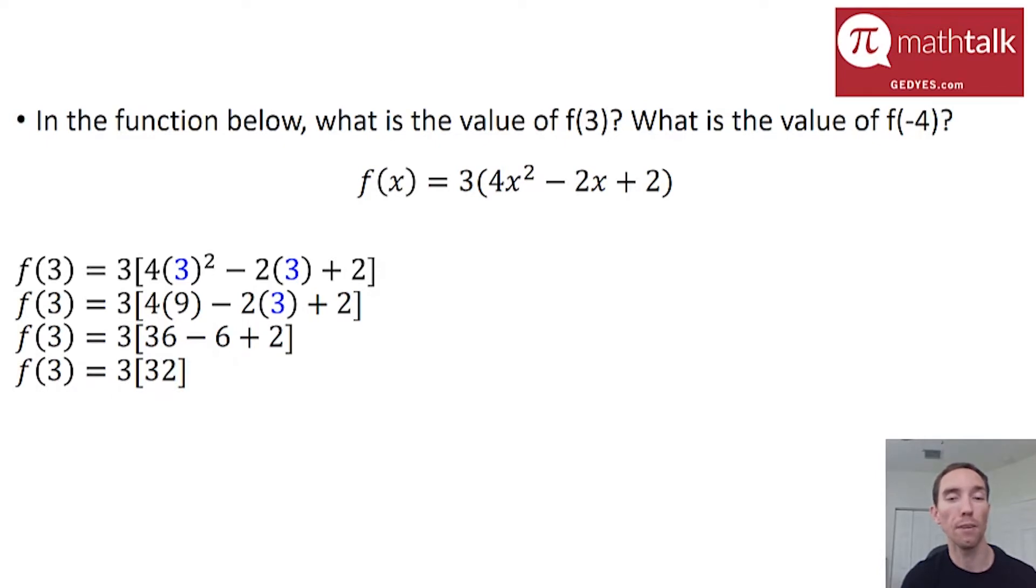So I'm left with my final step, 3 times 32, which is going to get me 96. So the value of the function when you plug in 3 is 96. So let's do the same thing, but for negative 4.